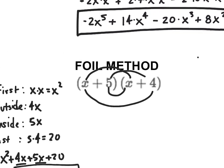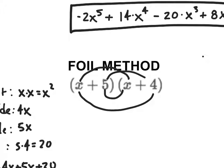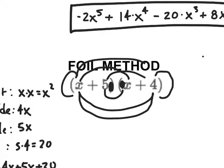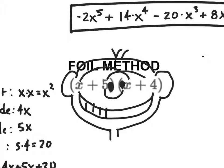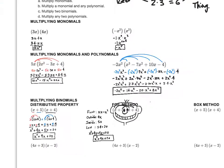One way to remember you've done FOIL correctly is that you get what looks like a face out of the arrows — I like to call it a Mr. Police face or a Joe Poe face. You get eyebrows, eyes, a nose, a big mouth, and ears. If you get a face out of your arrows, you're doing it correctly.